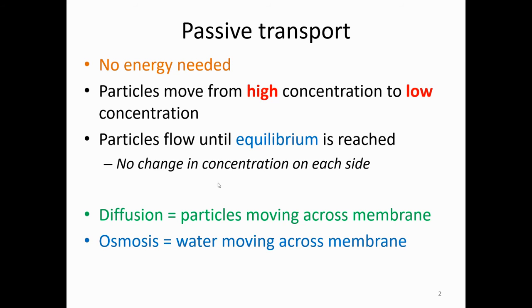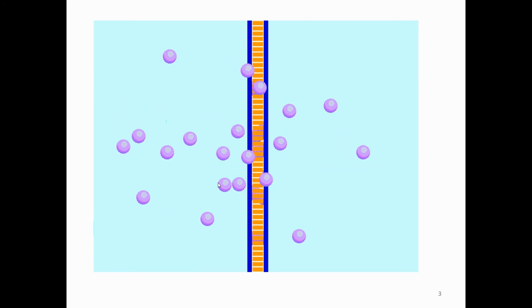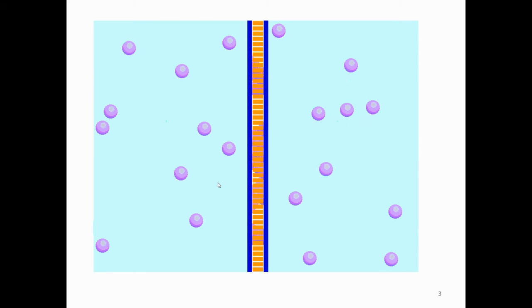Two types of passive transport are diffusion and osmosis. Diffusion is any particle moving across the cell membrane. In osmosis, we are specifically talking about water, and we'll get into that in just a second. In this animation, the particles on the left had a high concentration and on the right a low concentration, so the general flow is from left to right until equilibrium is reached.